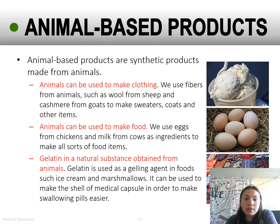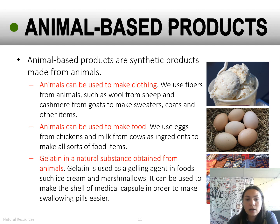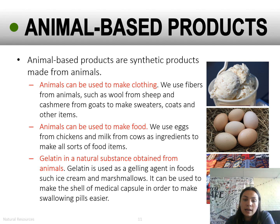Animal-based products are synthetic products made from animals. Again, you only need to provide one example on your guided notes. Animals can be used to make clothing — we use fibers like wool from sheep and cashmere from goats to make sweaters, coats, and other items. Animals can be used to make food — we use eggs from chickens and milk from cows as ingredients. Another example is gelatin, a natural substance from animals used as a gelling agent in foods like ice cream and marshmallows, and also used to make the shell of medical capsules to make swallowing pills easier.